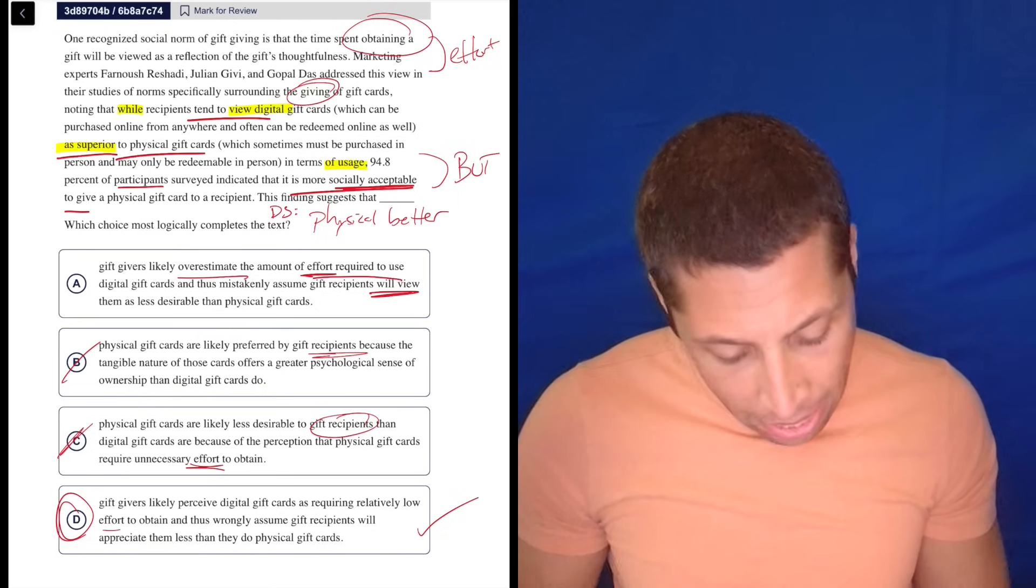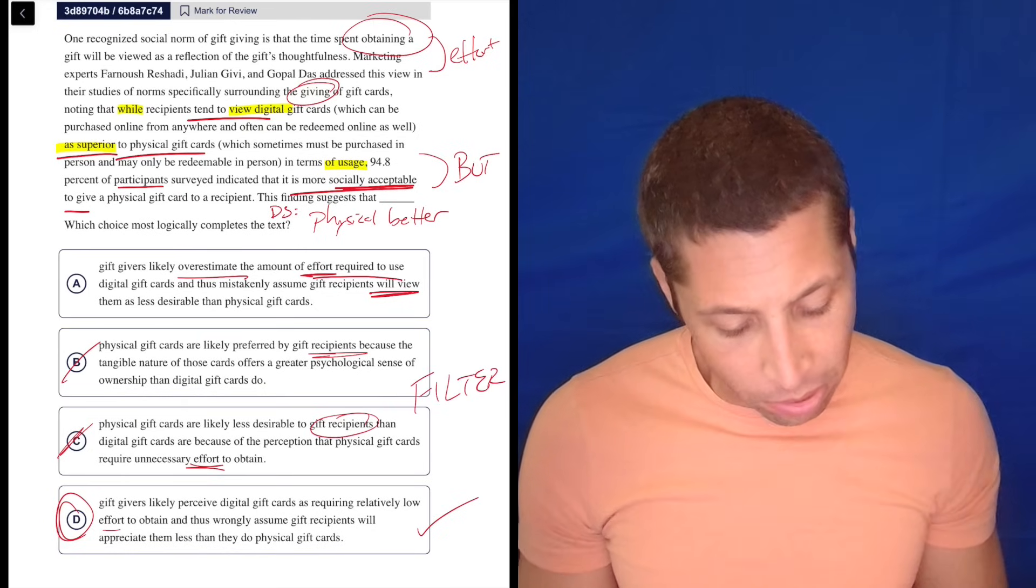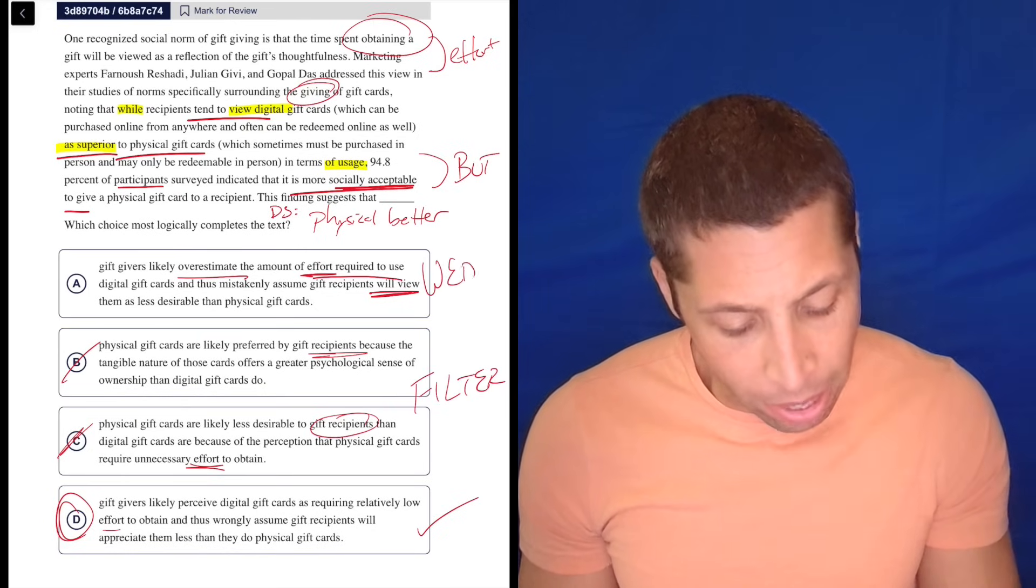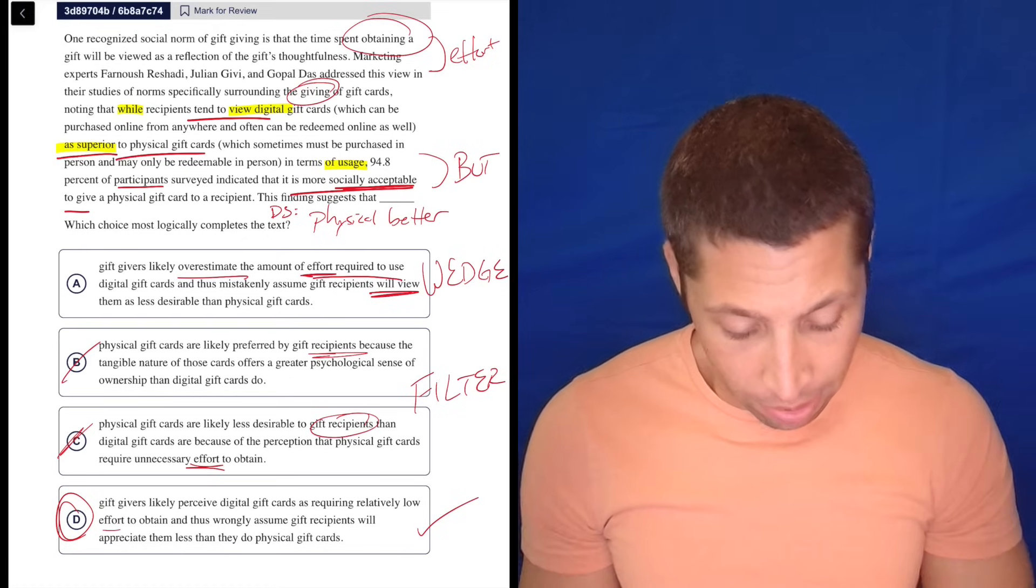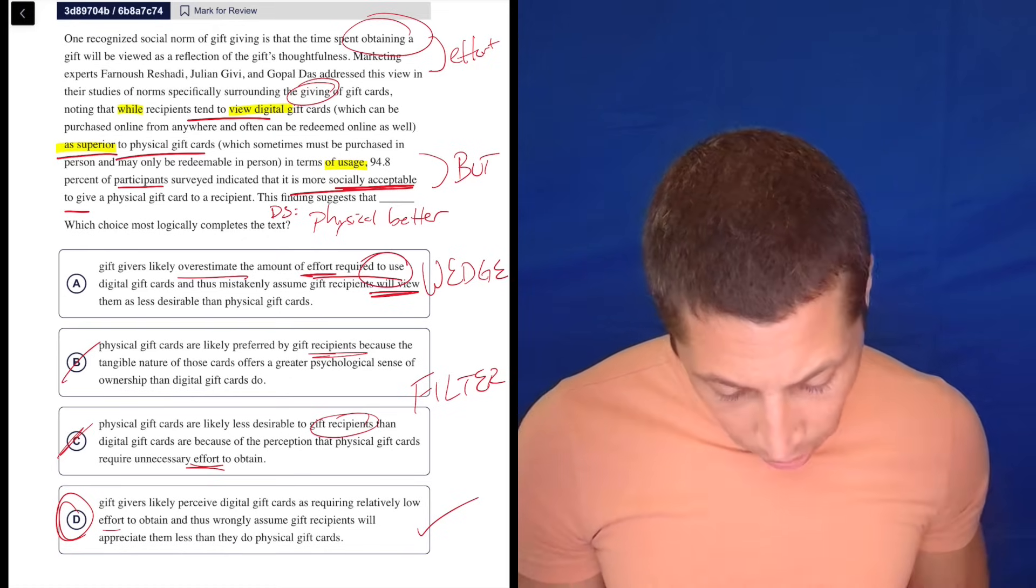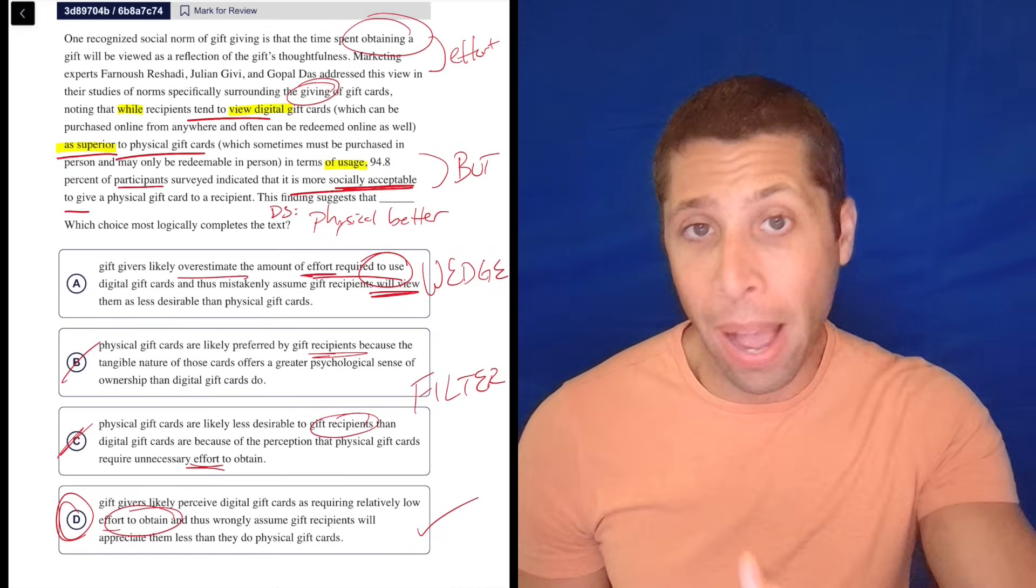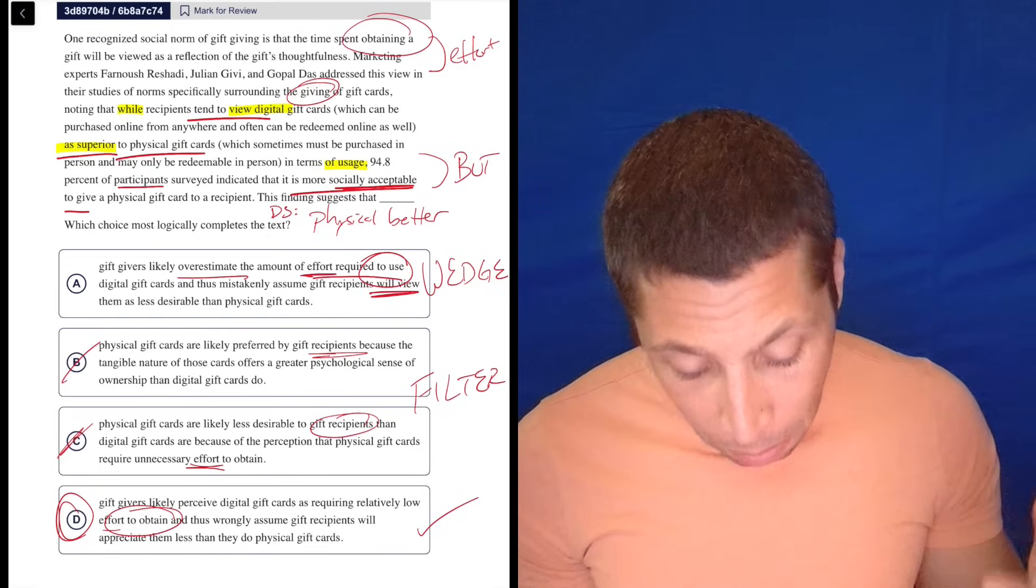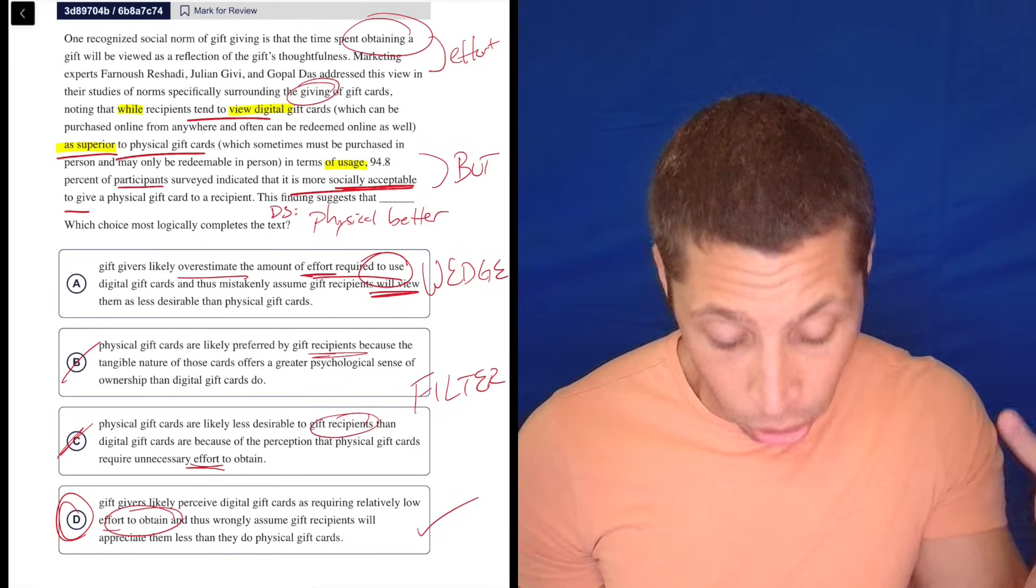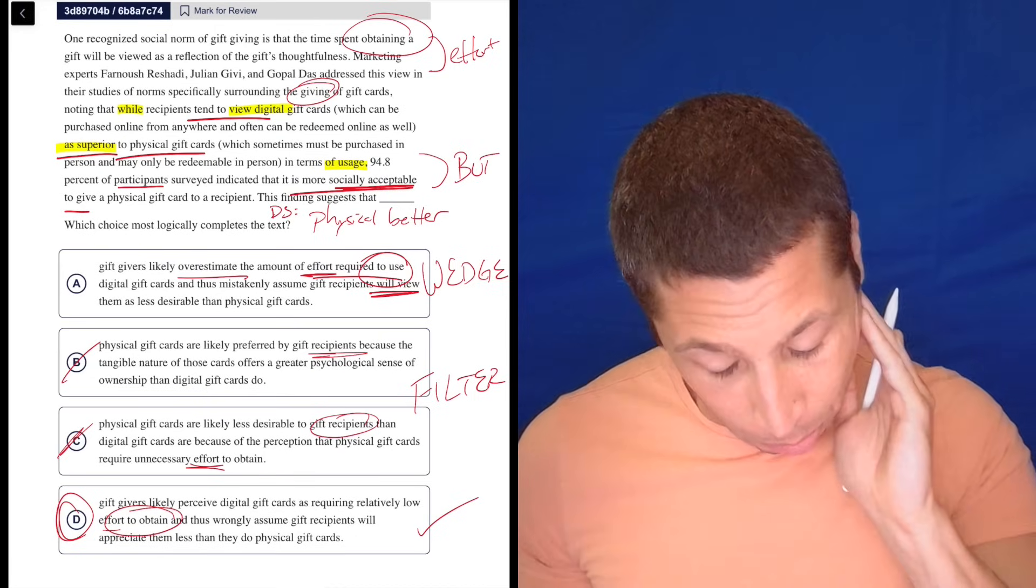But it's a great example of like the filtering, right? Filter out two choices that don't work. And then when you're down to two, they kind of seem related, find a wedge, find something that's different, right? This is the effort to use the gift card. This is the effort to obtain the gift card. Go back to the passage, look for that thing. My hardest, the hardest thing for me is that these stupid parenthetical statements in here are so long that I can't find anything without kind of stumbling into those parentheses.